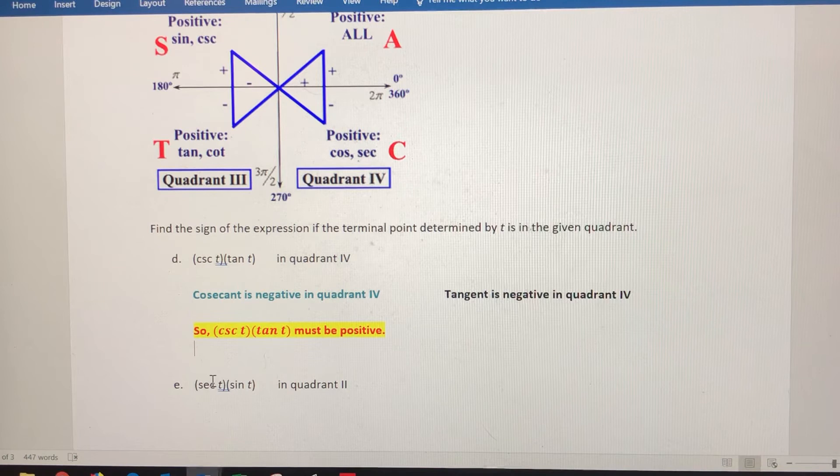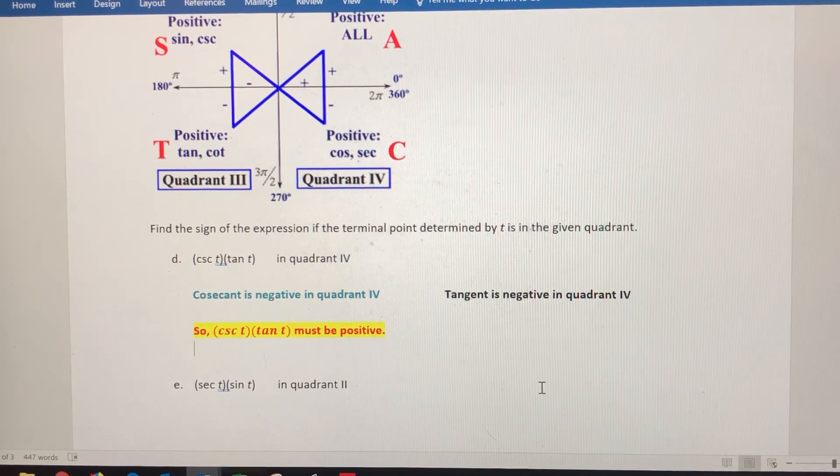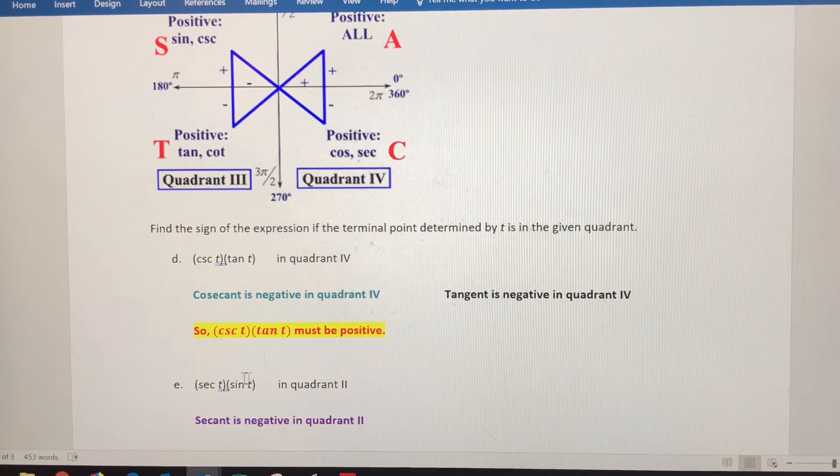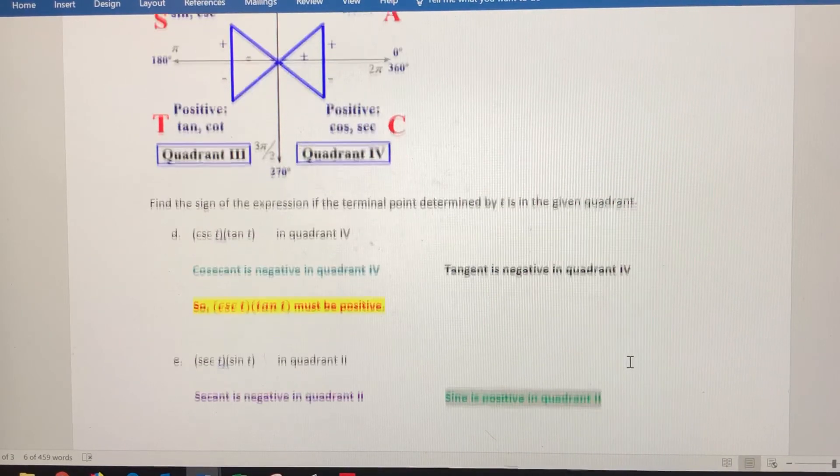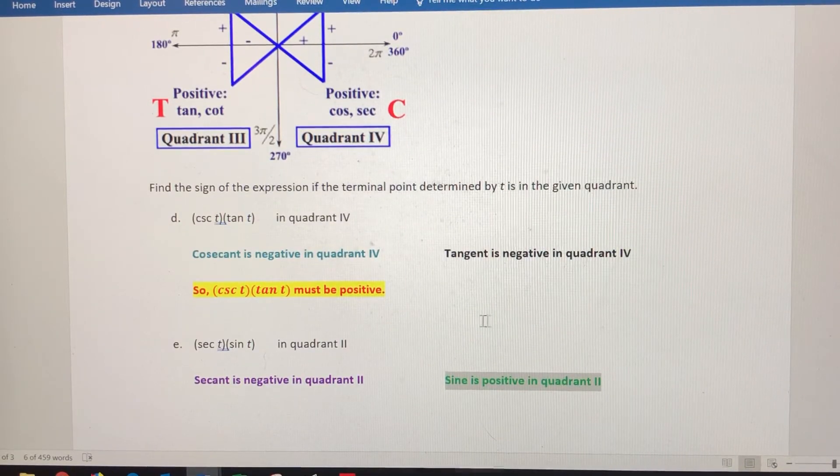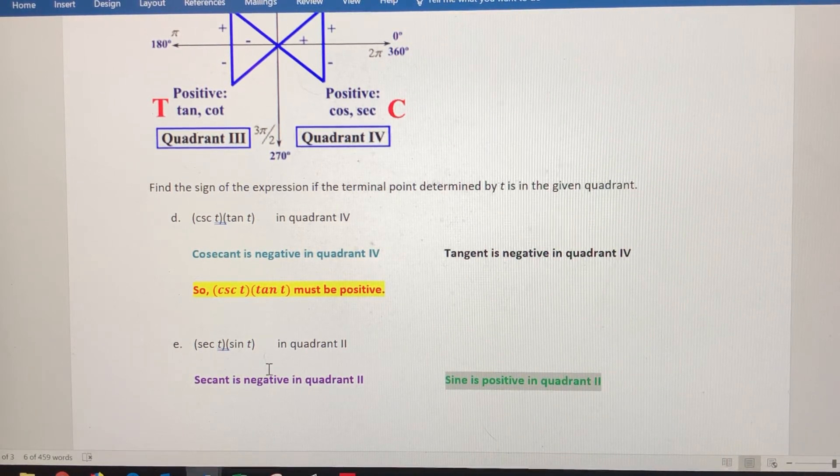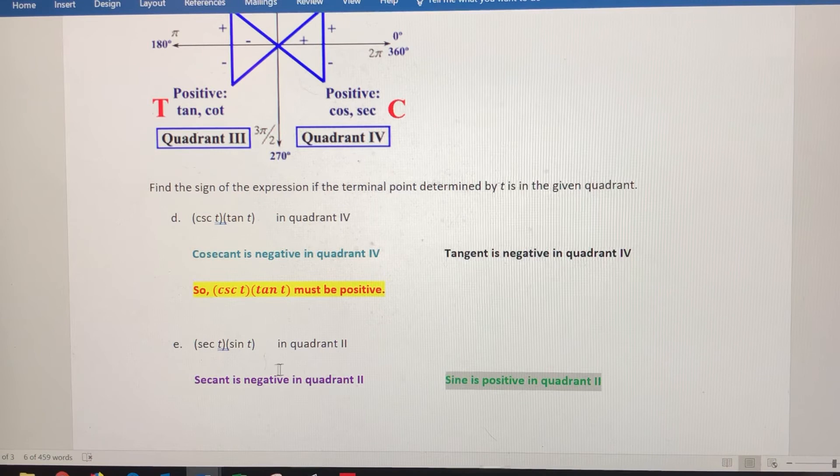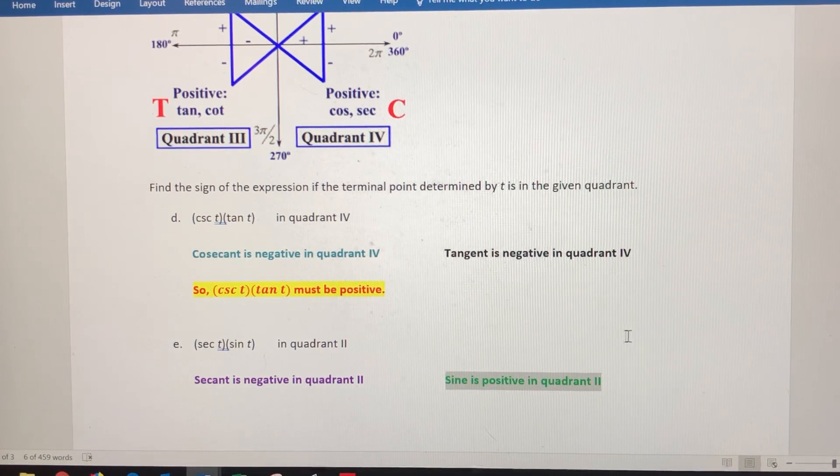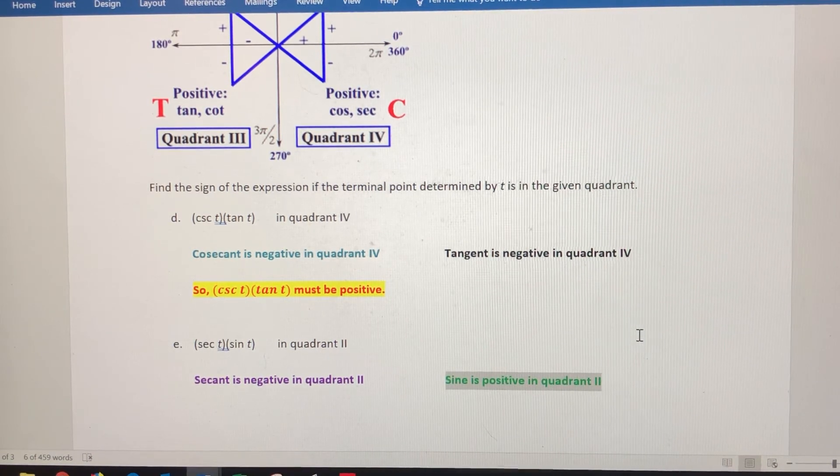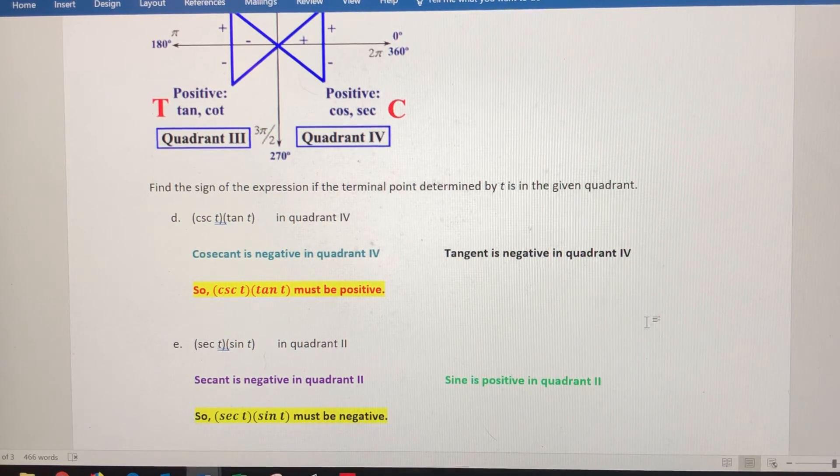In quadrant two, secant is negative because sine and cosecant are positive there. Sine is positive in quadrant two. The product of those two, regardless of what t is, involves a negative secant value. So the product is a negative value times a positive value, which means secant times sine must be negative.